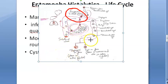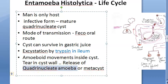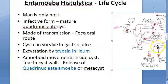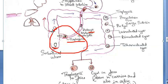The cytoplasm gets detached from the cyst wall and amoeboid movements appear, causing a tear in the cyst wall. The quadrinucleate amoeba is liberated — this is called the metacyst. Excystation happens due to trypsin in the ileum. Amoeboid movements inside the cyst create a tear in the cyst wall, and whatever is released is called the quadrinucleate amoeba or metacyst, which then becomes trophozoites.